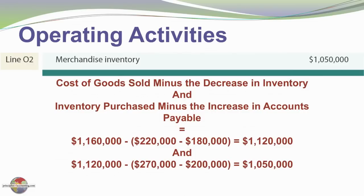Next, we're going to look at how much cash is paid for merchandise inventory. This calculation is a bit more complex. We show $1,050,000 as the cash paid to buy inventory. Starting with cost of goods sold on the income statement — $1,160,000 — we need to consider that there was a decrease in inventory. Beginning inventory was $220,000 and ending inventory was $180,000, so inventory decreased $40,000. That $40,000 of the $1,160,000 cost of goods sold came out of existing stock and was not purchased during the period, giving us a preliminary figure of $1,120,000.